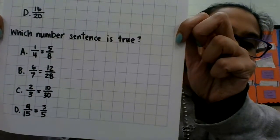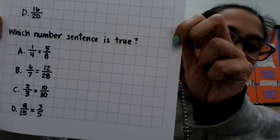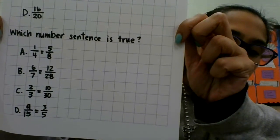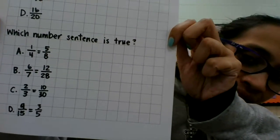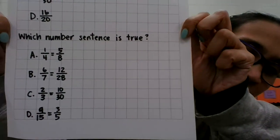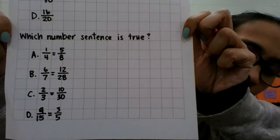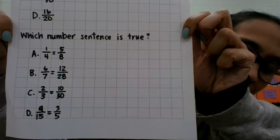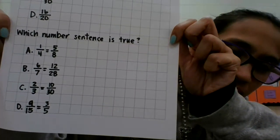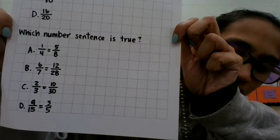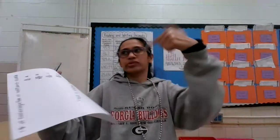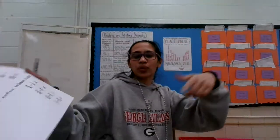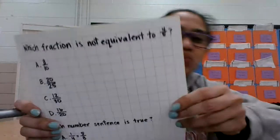The second question for today: which number sentence is true? A: one-fourth equals five-eighths, B: six-sevenths equals twelve twenty-eighths, C: two-thirds equals ten-thirtieths, or D: nine-fifteenths equals three-fifths. Write that down as well.